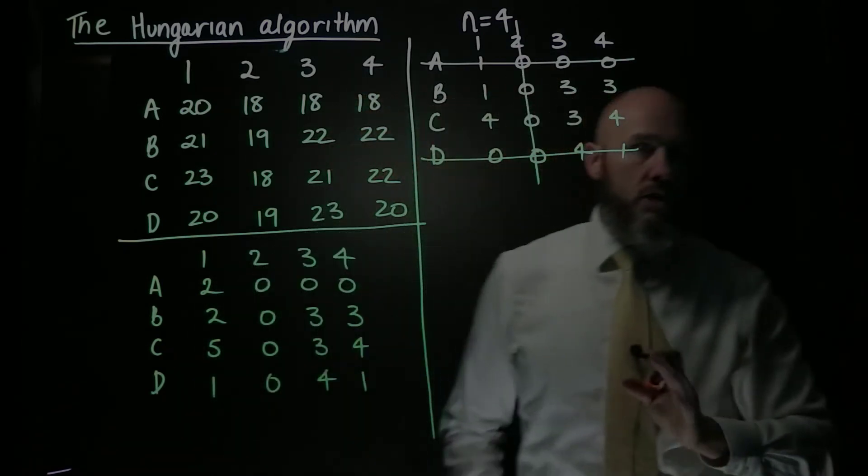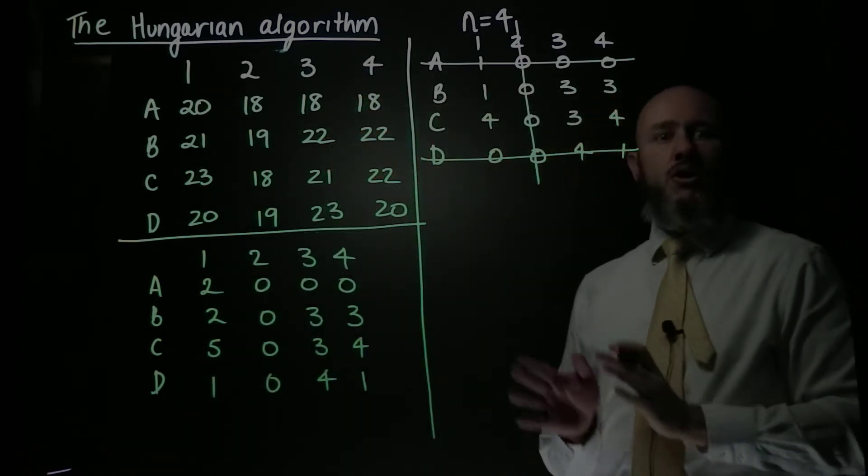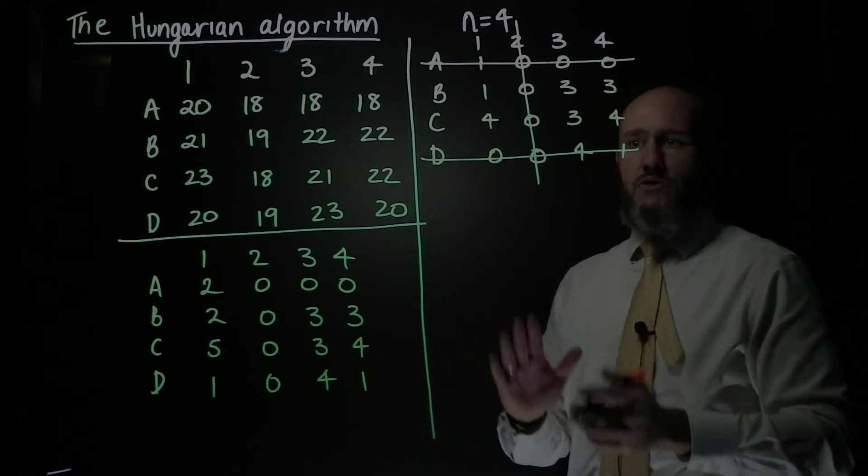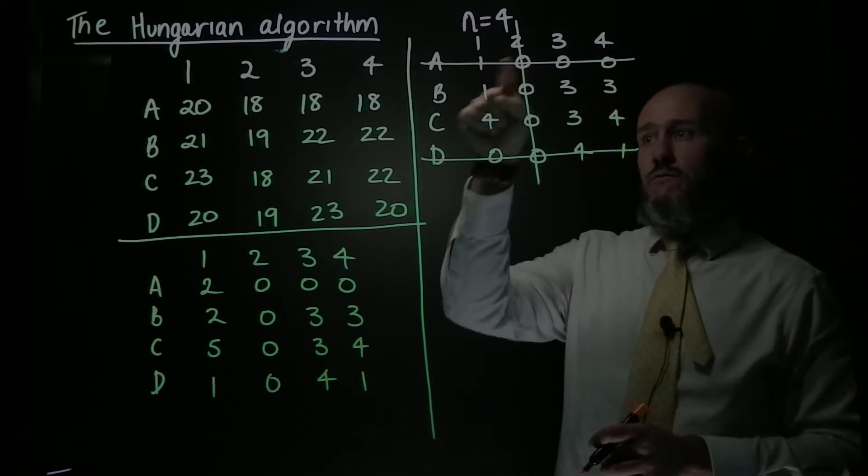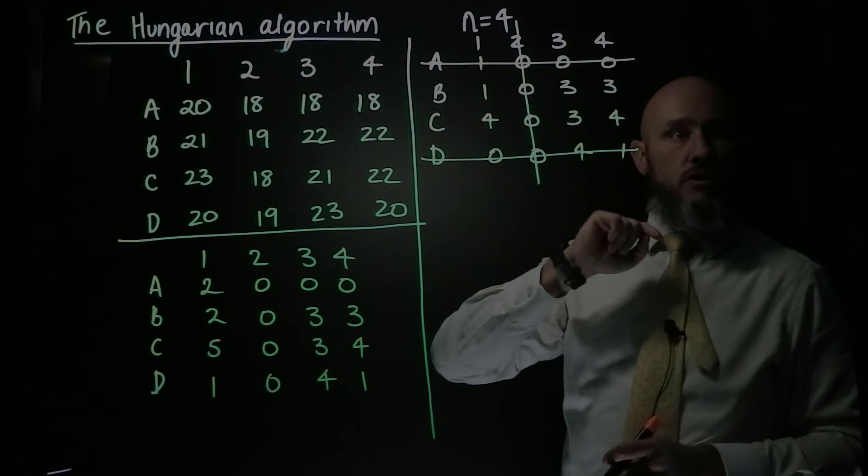Now this is my first opportunity to really point out to you what I mean by uncovered, single cover, or double covered. So you can see this A2 cell is double covered, it's got two lines over the top of it, and D2 cell is also double covered.